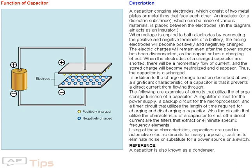An insulator, or a dielectric substance, which can be made of various materials, is placed between the electrodes. In the diagram, air acts as an insulator. When voltage is applied to both electrodes by connecting the positive and negative terminals of a battery,